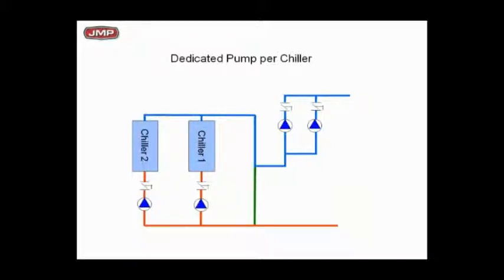So now going back to a primary-secondary loop, we have a dedicated pump per chiller. You see the common pipe, and you see the secondary pumps going on.